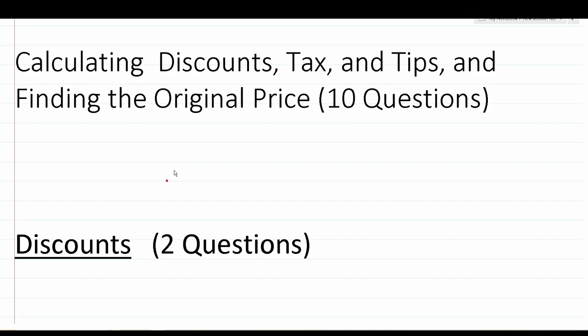Welcome to another episode in my Grammar Hero series. In today's video I'm going to be discussing how to calculate discounts, tax, and tips. In addition I'm also going to discuss how to find the original price of an item when you're either given a discount or a tax on that item. More specifically I'm going to work out 10 practice test questions that should closely mirror what you should expect to see on both the Armed Services Vocational Aptitude Battery, the ASVAB, as well as the Pre-Screening Internet Delivered Computer Adaptive Test, the PI-CAT.